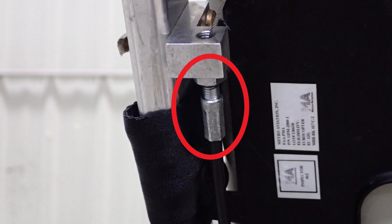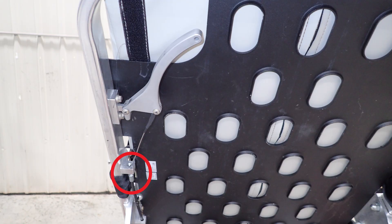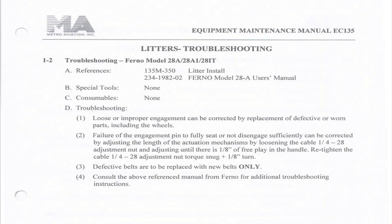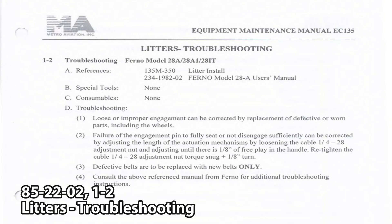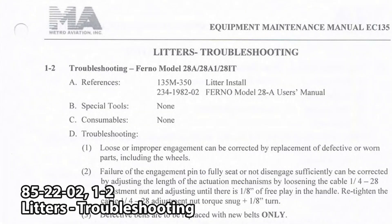Here's a look at where the adjustment is in relationship to the handle. You go to Metro Aviation's website, you go to EC-135, and it's the equipment maintenance manual for the installation of the emergency medical services systems kit 135M-100.